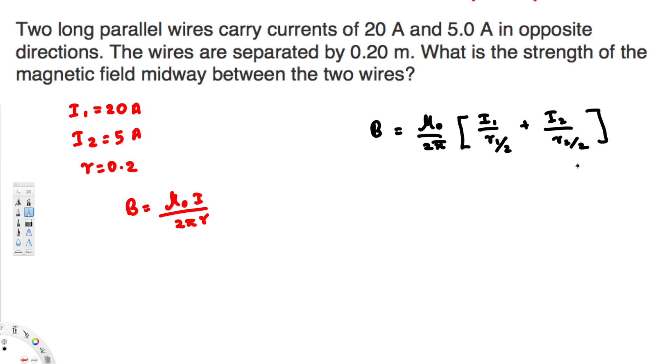Now let's go ahead and plug the values in and see what we get. μ₀ is going to be 4π × 10⁻⁷ divided by 2π. The first current is 20 amperes divided by the separation, 0.2, divided by 2 because it's midway. Plus 5 divided by again the separation 0.2 divided by 2.